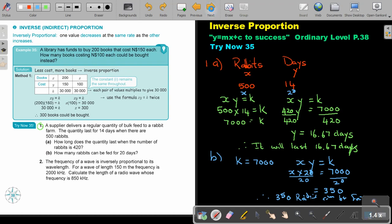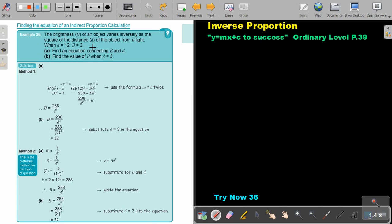Let's go on to the little bit more complicated one. The brightness B of an object varies inversely, so it's indirect, as the square of the distance of the object from a light. So when D is 12, B is 2. Find the equation. You start again by saying B, the proportion sign. But because it's indirect, you say 1 over D square. In direct, you put it on the same line, but in indirect, you say 1 over.